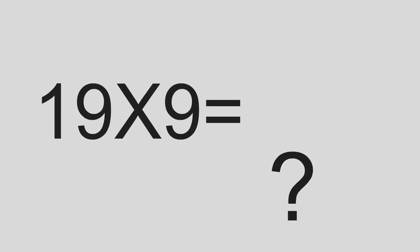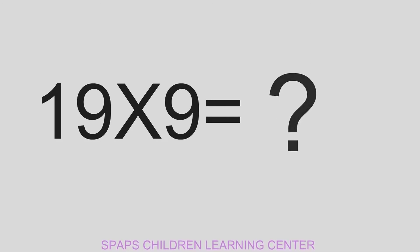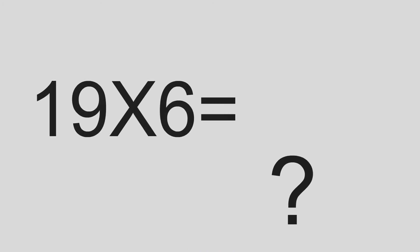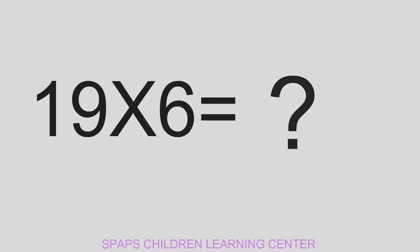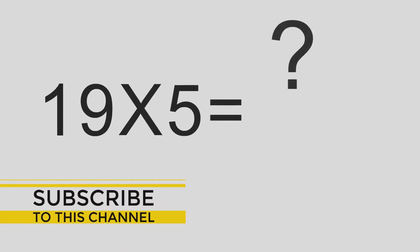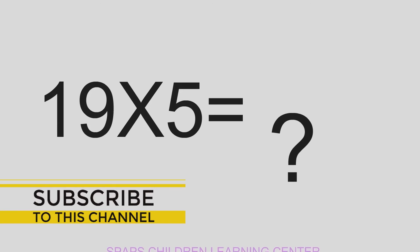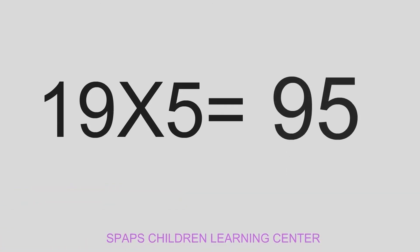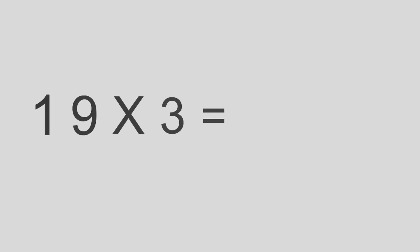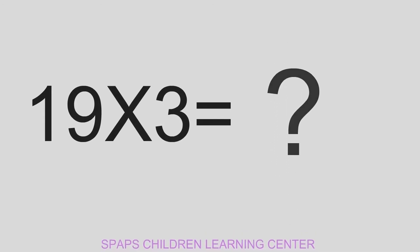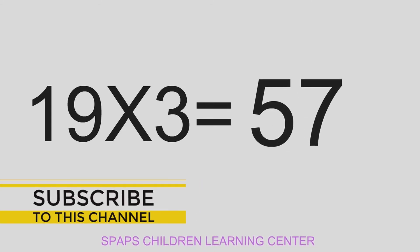19 x 9 equals to 171. 19 x 6 equals to 114. 19 x 5 equals to 95. 19 x 3 equals to 57.